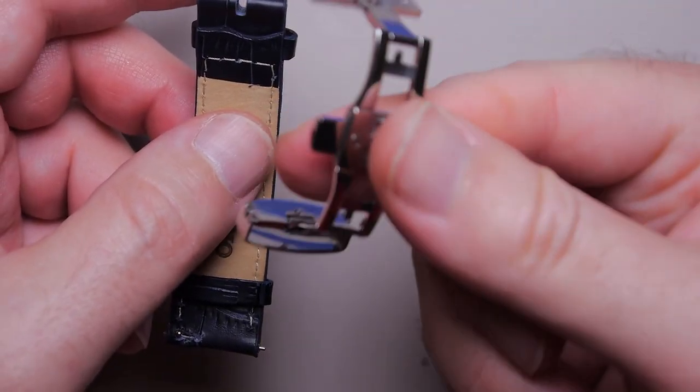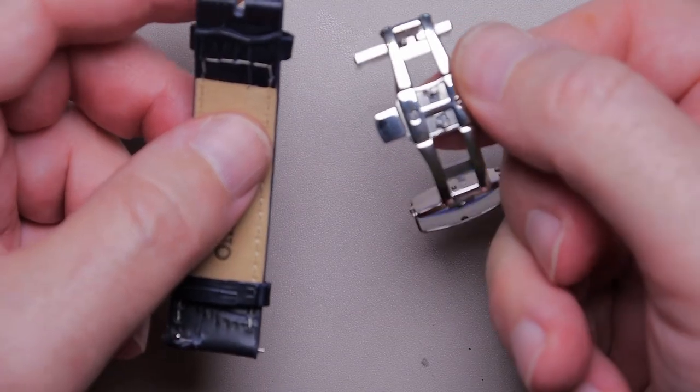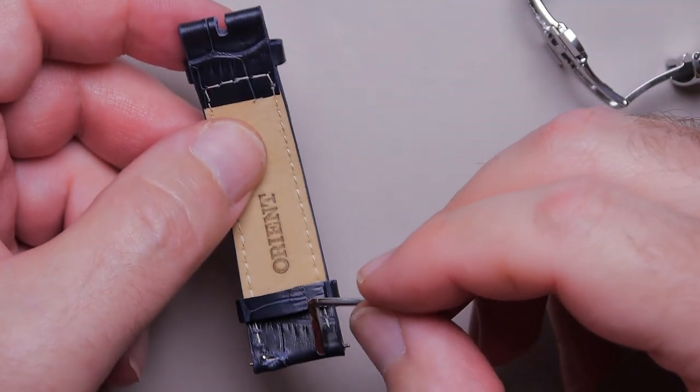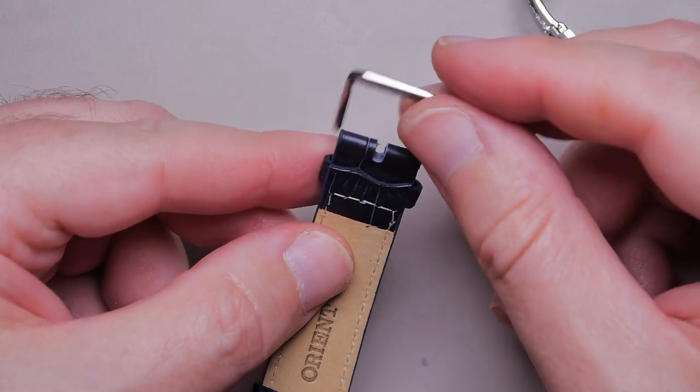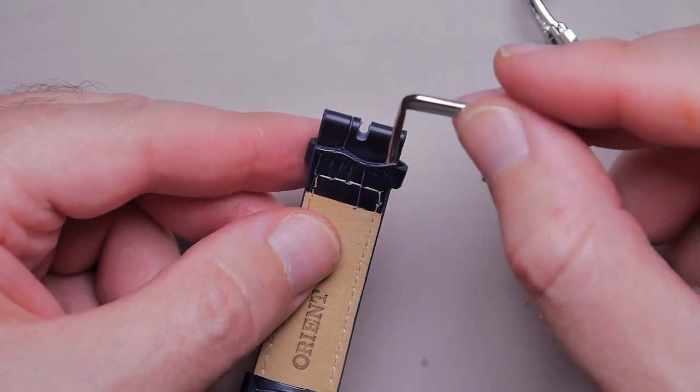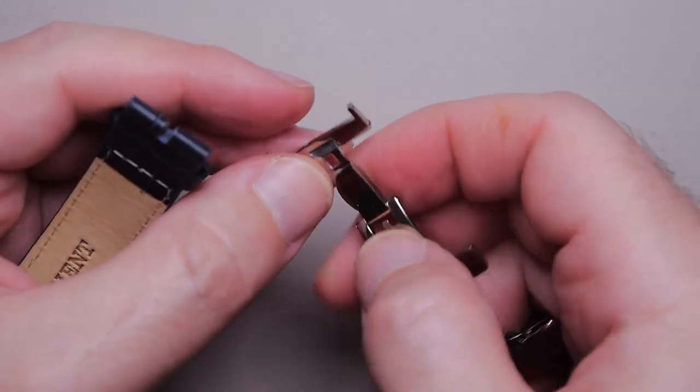And by the way, when you order your clasps, no matter which one you order, you have to know the size at the buckle. So even though you might have 20 up at your lugs, the clasp cares about the buckle width. So make sure that's either the same and you know what it is, or if not measure it or look up your specs. So now we've got that.